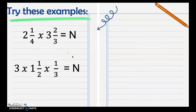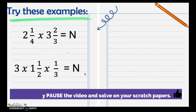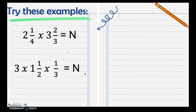I want you to try these examples. Check if your answer is correct — here are the answers: for 2 and 1/4 times 3 and 2/3, the answer is 8 and 1/4. For 3 times 1 and 1/2 times 1/3, the answer is 1 and 1/2.